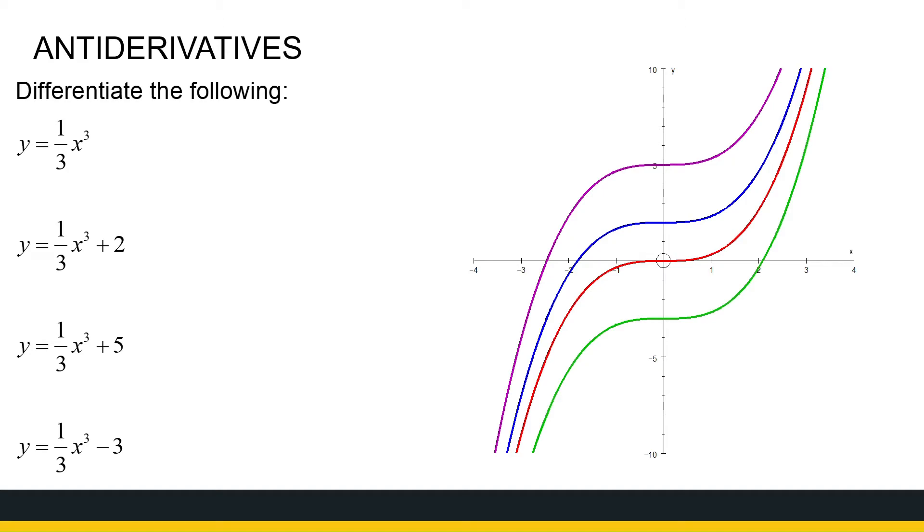So let's take a look at this example. Here are four functions. They only differ by a constant. I've sketched them here. If we had to find the derivatives of these functions, take a look. The derivative of this first function is just a third times three, so it's one x squared, so it's x squared.